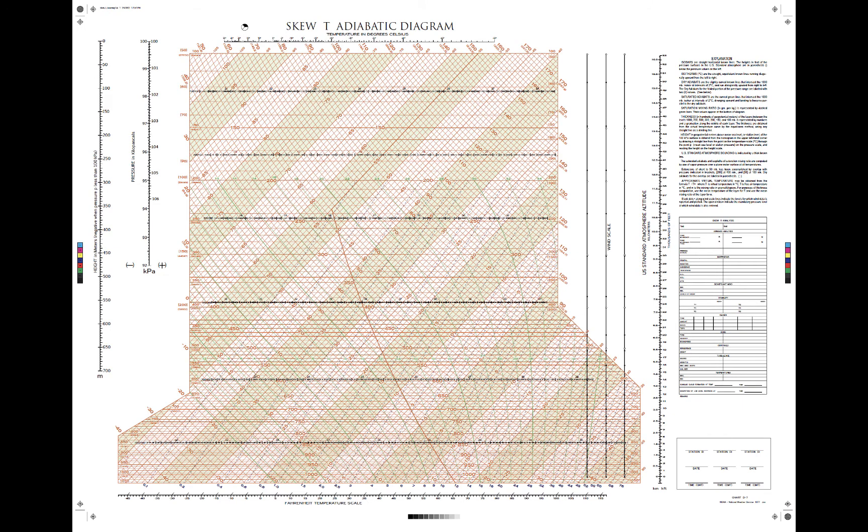This is a skew-T log-P plot, hopefully you've seen one before. It is called such because the pressure coordinate on the vertical axis is plotted logarithmically to be roughly proportional to height. The temperature axis is skewed from lower left to top right, and we'll look at this up close here in a moment.